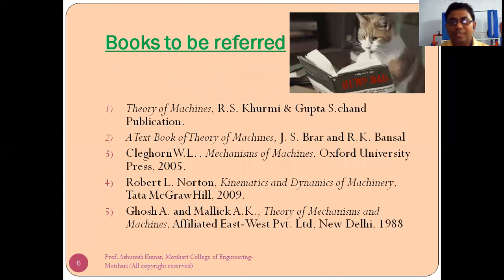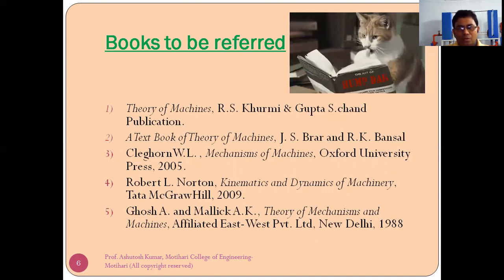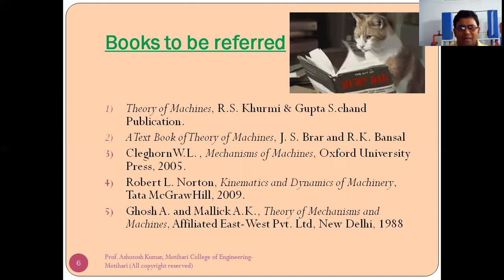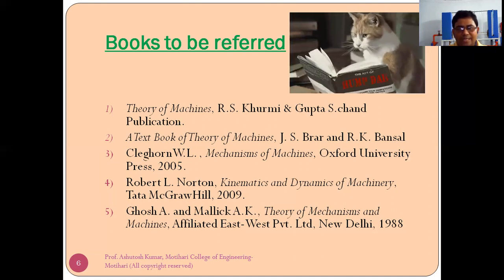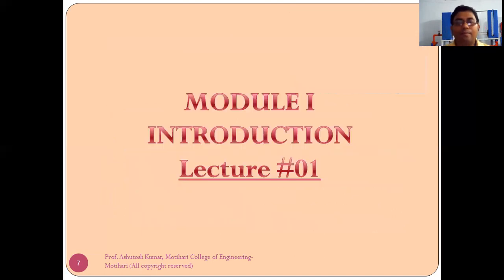Now, books to be referred — which is very important. You can refer to Theory of Machines by Rattan, S.S. Rattan, or by Khurmi, or Batra. These are very standard textbooks every student should have. Also, a textbook of Theory of Machines by J.S. Brar and R.K. Bansal. If you prefer foreign authors, you can refer to Shigley's or Malik — Theory of Mechanisms and Machines. Now let us formally start module one.